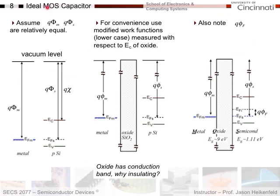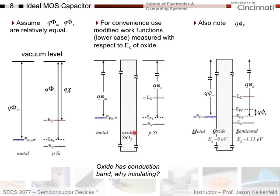To figure out threshold voltage, we need to answer how inversion creates electrons in P-type material. There's no current injection — it's just a capacitor — so the Fermi level must shift to change the material from P-type to N-type, because the Fermi level predicts whether material is P-type or N-type. Let's look at the metal-oxide-semiconductor capacitor: just the portion with metal on top of the oxide on top of the semiconductor, where we want to create the channel. Assume metal and semiconductor work functions are equal so Fermi levels line up.